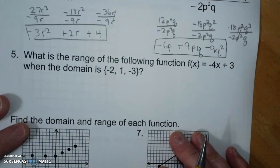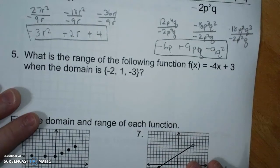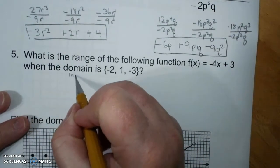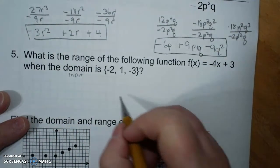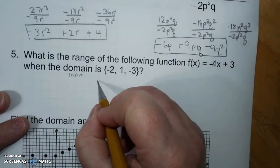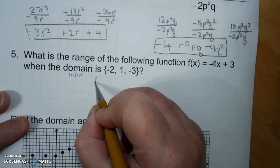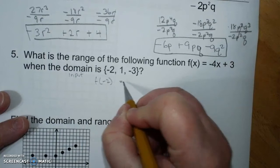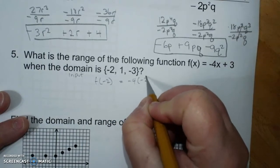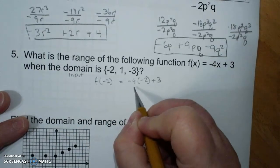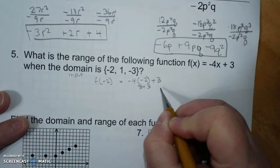What is the range of the following function when the domain is negative 2, 1, negative 3? So this is the input and I want output. F of negative 2 is negative 4 times negative 2 plus 3, which is 8 plus 3, which is 11.